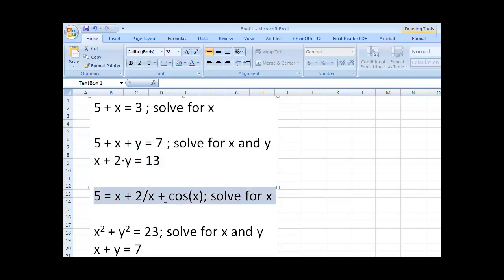We get to more complicated equations. Like here, 5 plus x plus 2 divided by x plus cosine of x. So, or it's 5 equals x plus 2 divided by x plus cosine of x. And we're asked to solve for x.